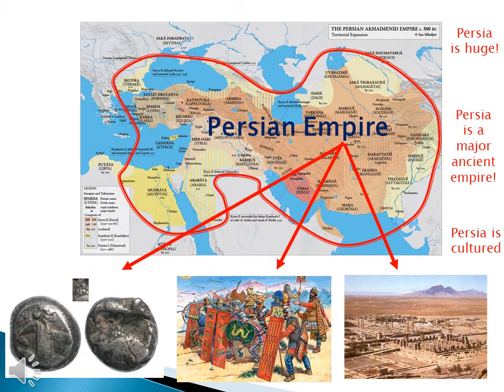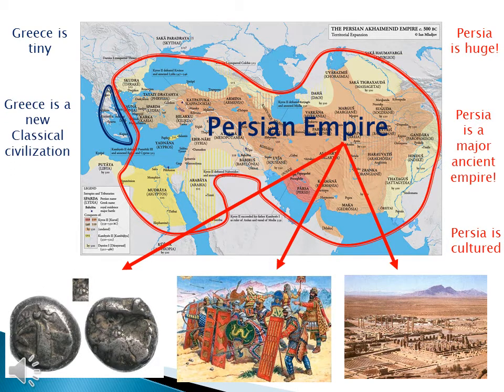Now let's talk about Greece. Greece is tiny, Greece is a new classical civilization, and Greece is not unified. So how did this little tiny civilization beat the Persian Empire? Let's find out.